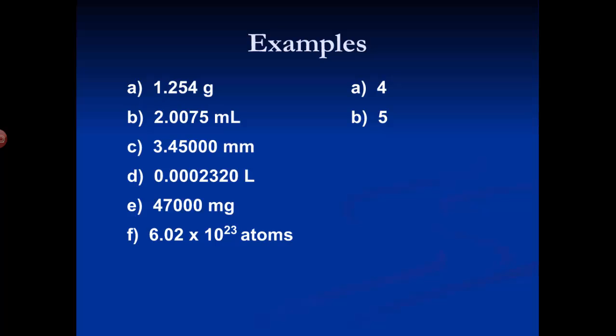C: 3.4500 millimeters. The 3, the 4, and the 5 are all significant by rule one. The zeros at the end are not in between non-zero digits, so we can't use rule two. They're at the end of the number and to the right of the decimal point, so according to rule four they are always significant. All six of those digits are sig figs.